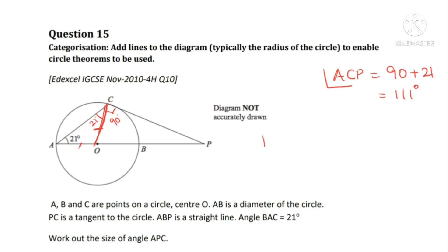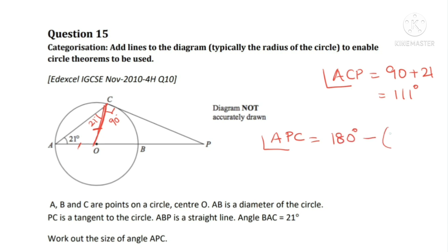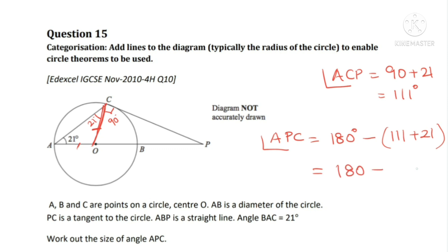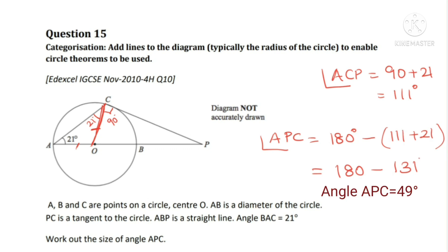Now we will consider angle APC, which is 180 minus 111 plus 21, which is 180 minus 131. So angle APC is equal to 49 degrees.